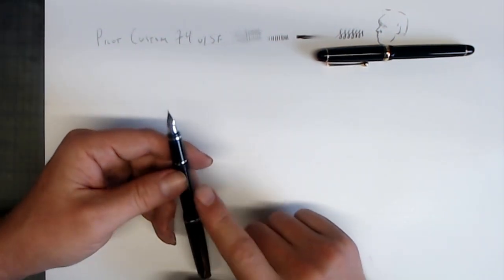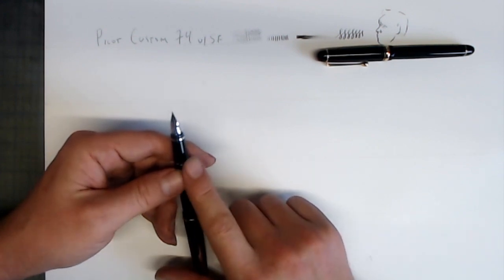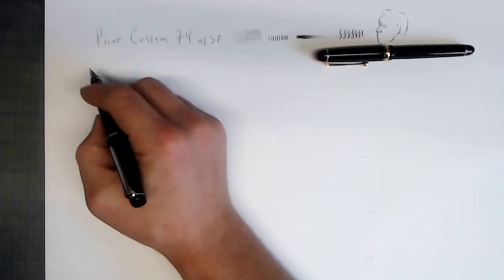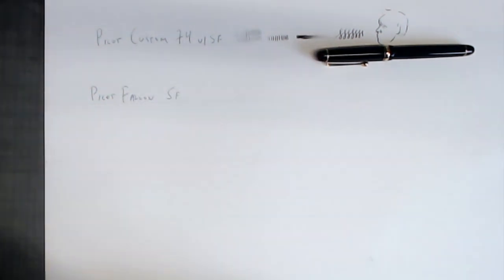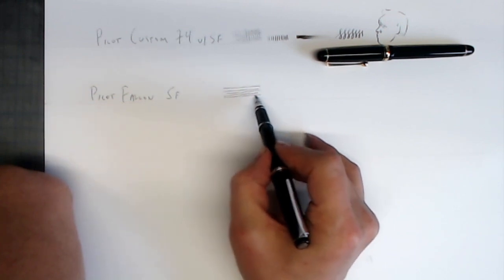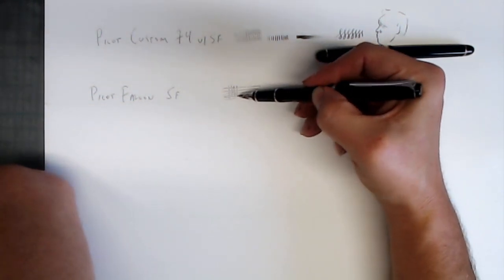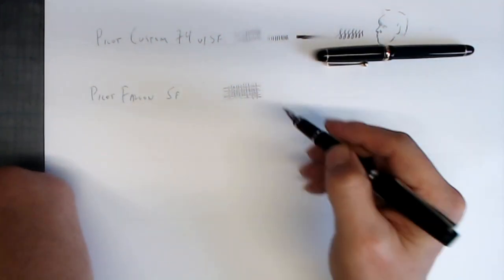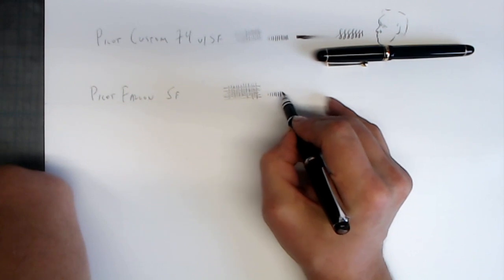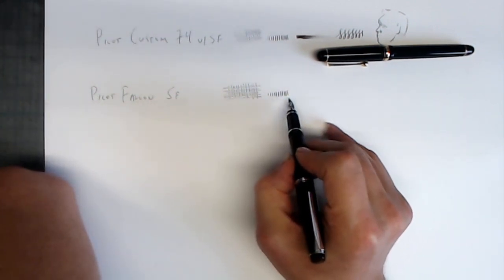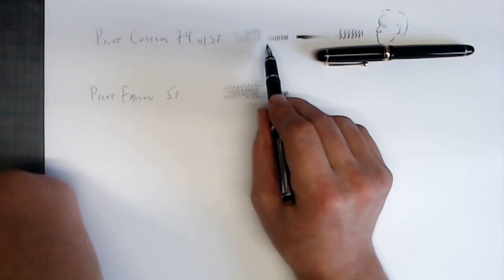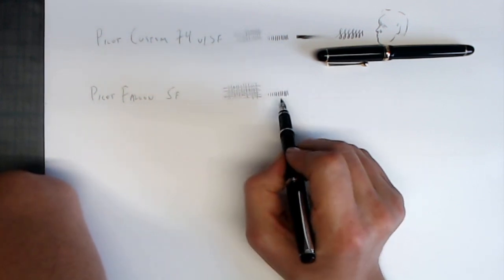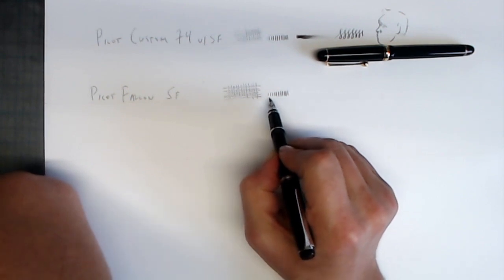This one is a fine, not an extra fine, a fine. So this is the Pilot Falcon with a soft fine nib. Okay, so let's go through the tests. You can see that this pen puts down a slightly heavier line than the Custom 74. This is without pressure at all. Let's flex it a little bit. So you can see it has a little bit more flex than the Custom 74, but it starts off thicker. You can see that the Custom 74 starts off with a hair, even thinner than a hair, and goes thick, whereas this one already starts off as kind of a traditional fine line.